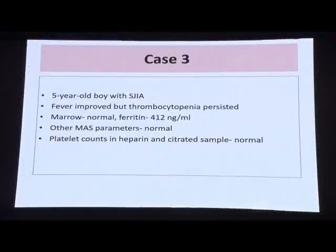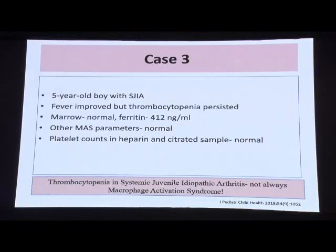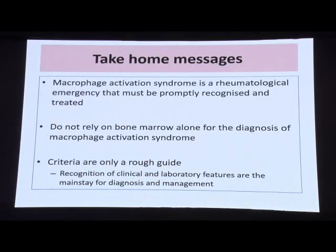Case 3 involves pseudothrombocytopenia: a 5-year-old boy with systemic JIA whose fever improved but thrombocytopenia persisted. Bone marrow was repeated and was normal, ferritin was only 412, and other MAS parameters were normal. Platelet counts in heparin and citrated samples revealed normal platelet counts, confirming EDTA-induced pseudothrombocytopenia in systemic JIA.